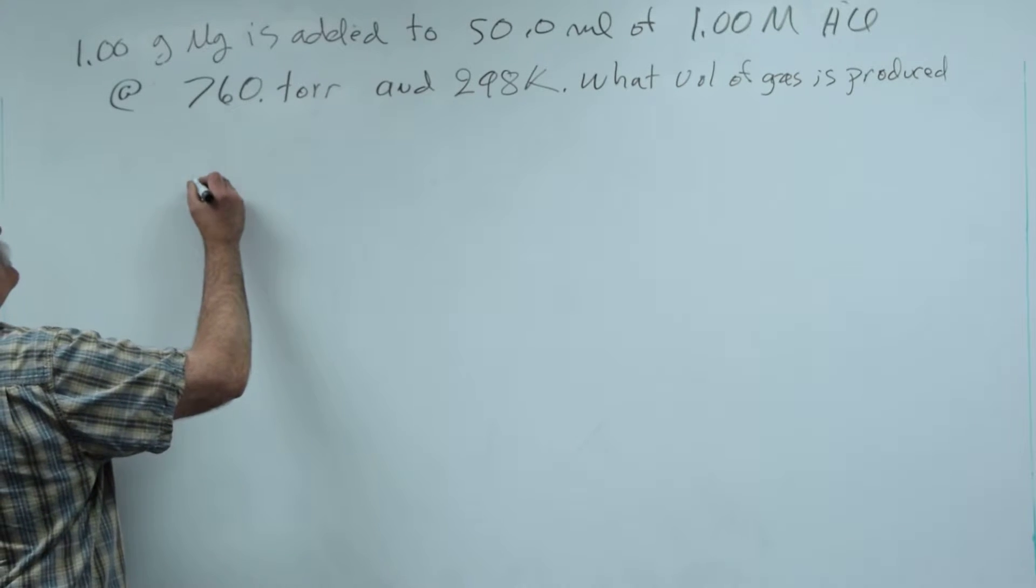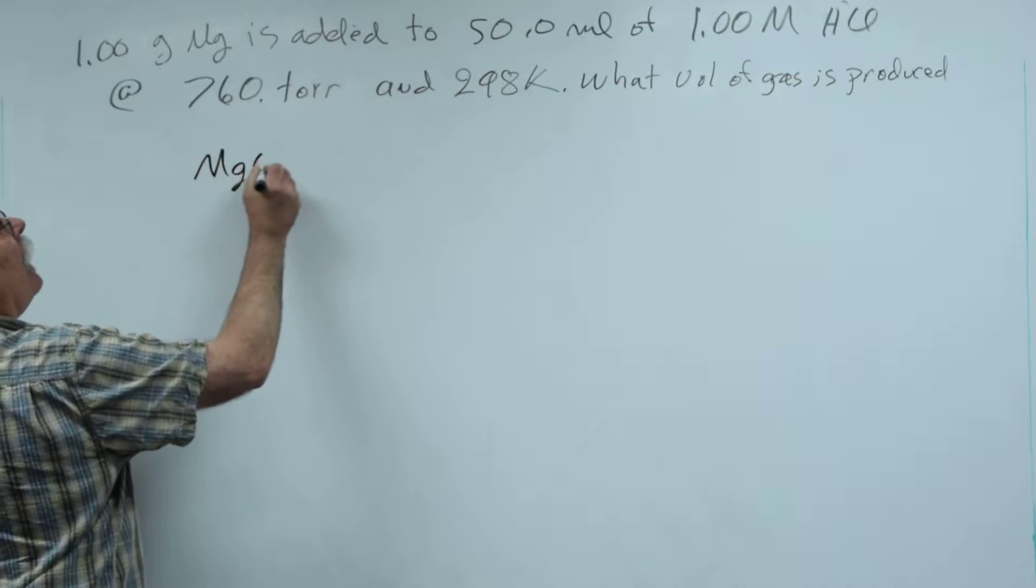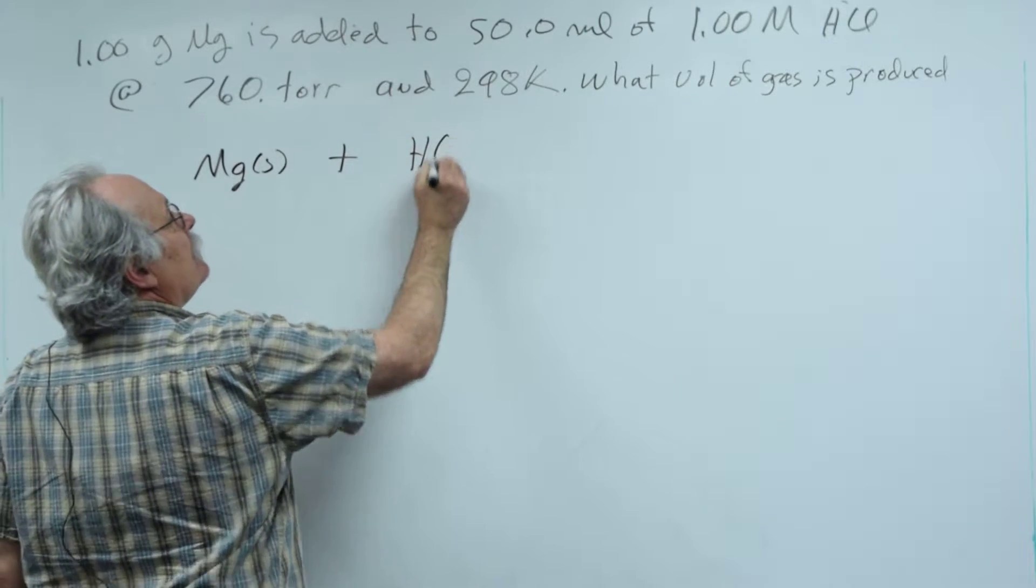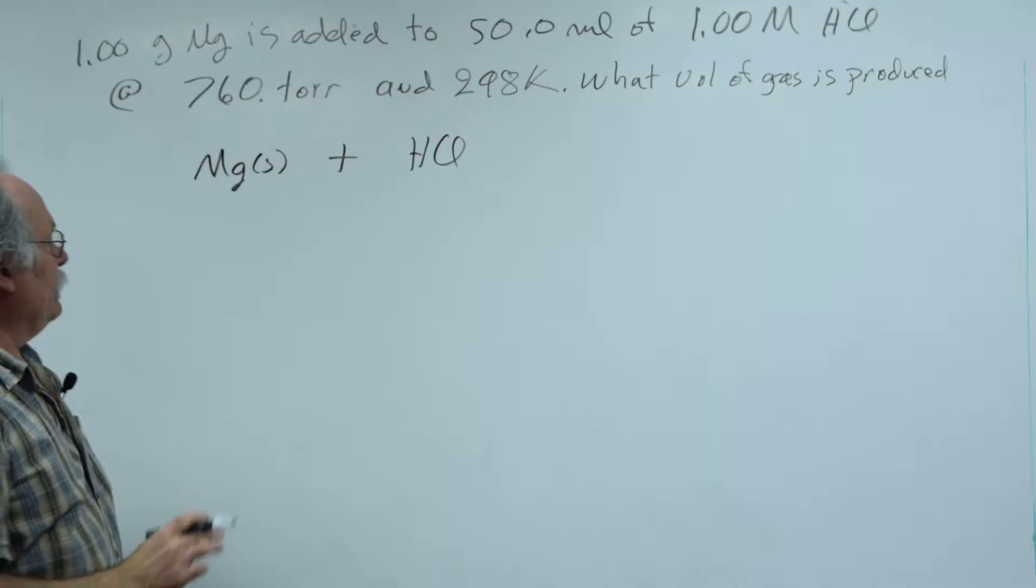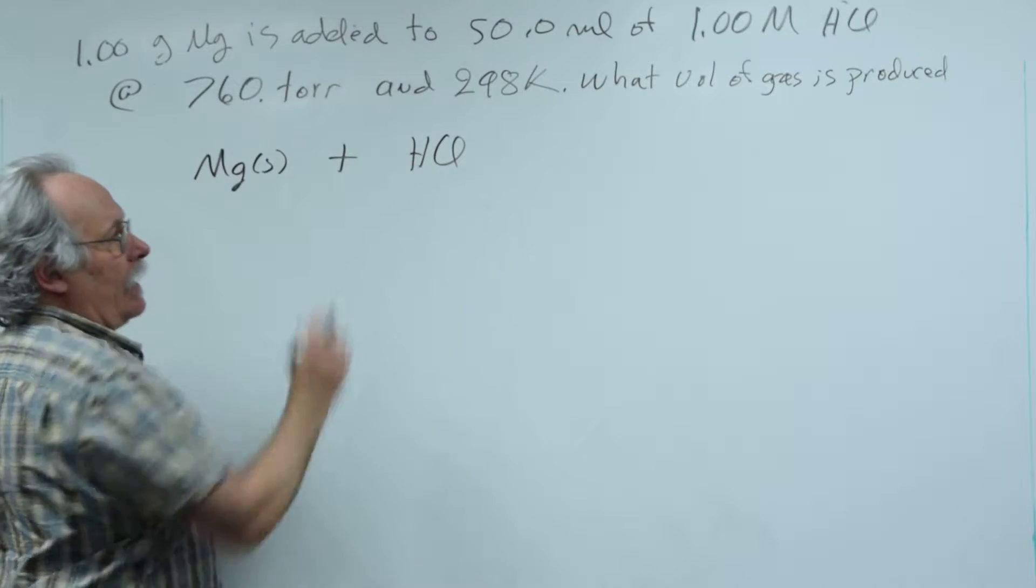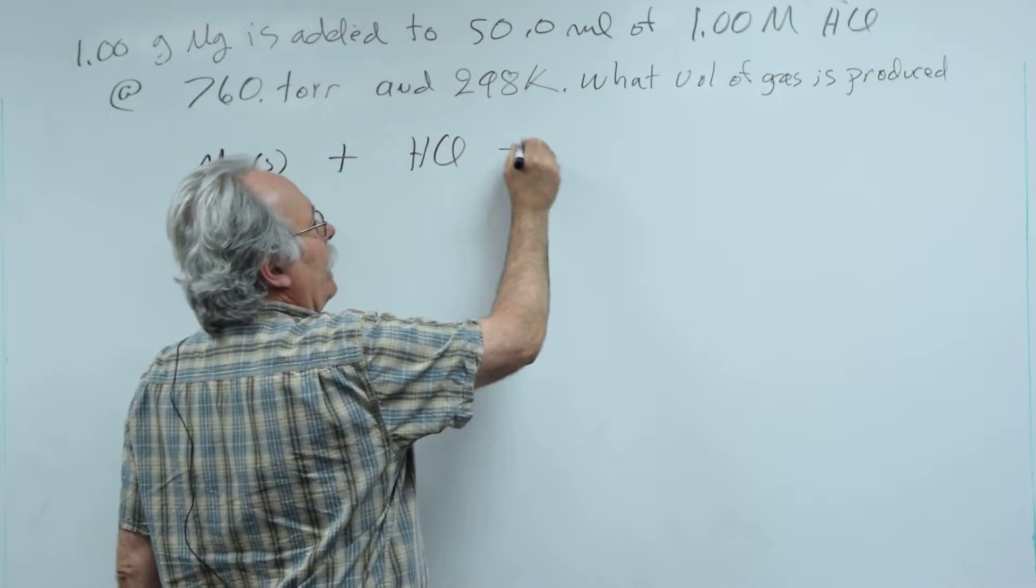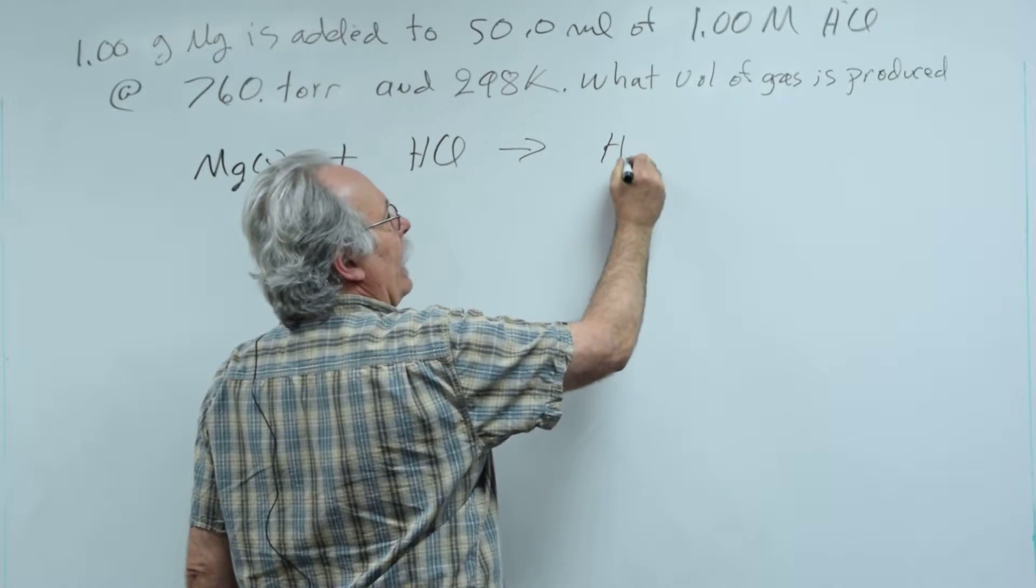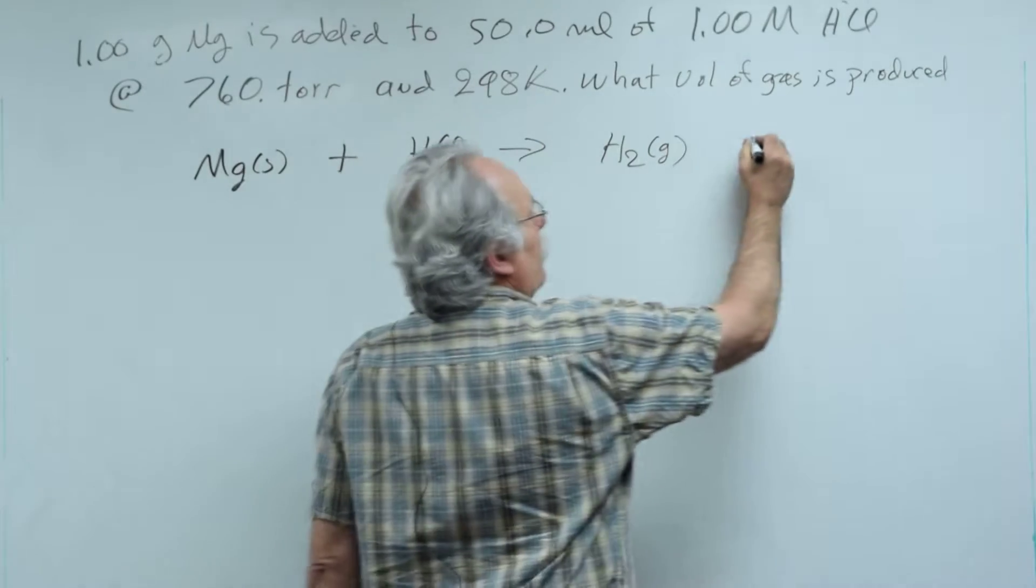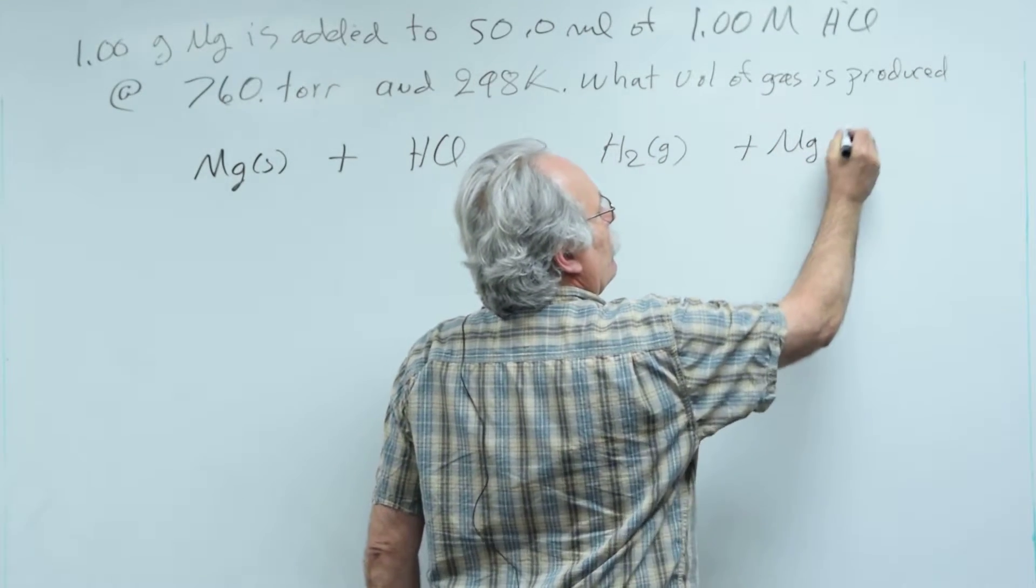So, my equation is the magnesium as a solid reacts with the HCl. This is a single displacement reaction. The magnesium displaces the hydrogen and the acid and it forms pure hydrogen, which we know is a gas at these conditions, plus magnesium chloride.